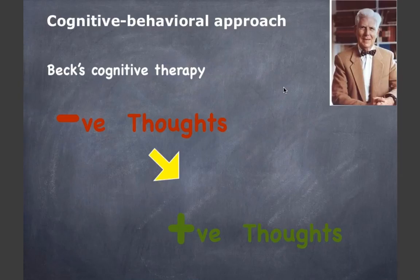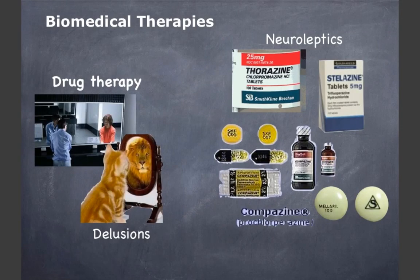Biomedical therapies are based on the assumption that psychological disorders are symptoms of underlying physical problems. This includes drug therapy, electroconvulsive therapy, and psychosurgery. Millions of people take medications for psychological problems. Antipsychotic drugs are used to control severe psychotic symptoms such as delusions, hallucinations, disorganized speech, and behavior. They inhibit dopamine activity and are also known as neuroleptics — examples include Thorazine, Stelazine, Compazine, and Mellaril. Fifty percent of patients have good responses.